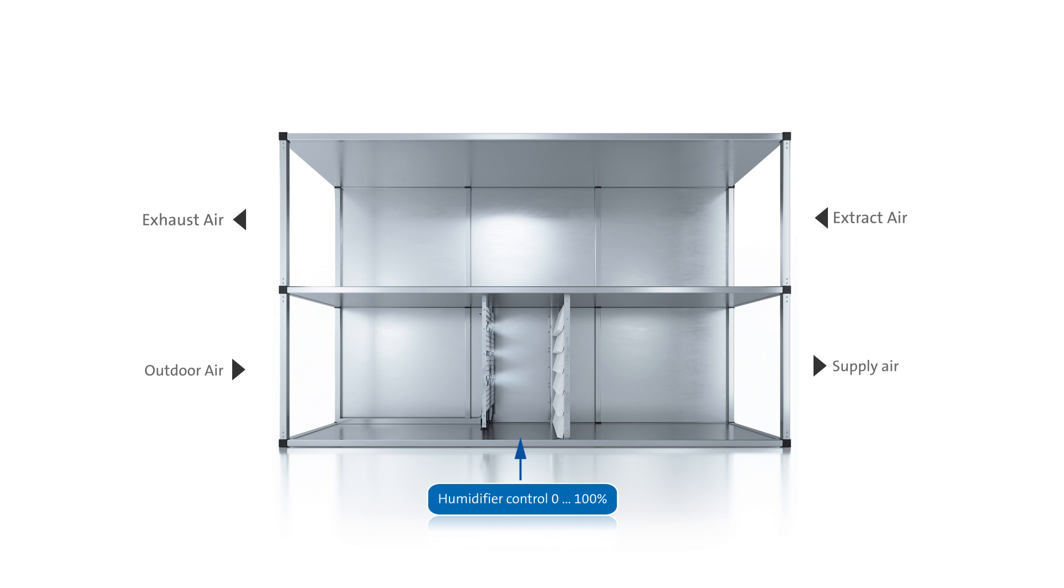The humidification control system provided in a ventilation and air conditioning unit generally distinguishes between humidity control for room or exhaust air and humidity control for supply air.